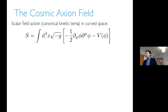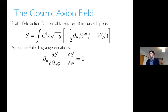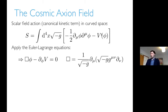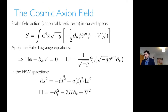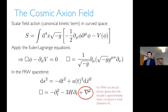We have the scalar field action with a canonical kinetic term in curved space. Applying the Lagrange equations gives the Klein-Gordon equation, where box is the d'Alembertian evaluated on curved space. In FRW, box takes the form: minus dt squared minus 3H dt plus nabla squared. For FRW we should strictly ignore nabla squared but include it approximately when curvature is small. If you want to talk about gravitational growth of structure, you need to also include metric perturbations into the evaluation of box.